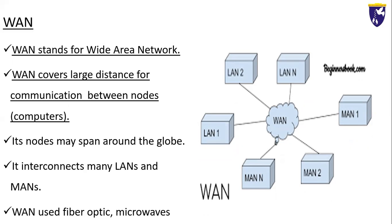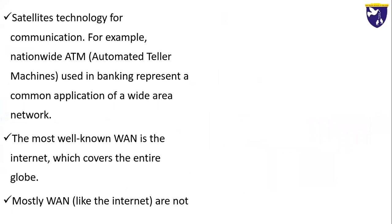Anything connected within the network is called a node — it can be a computer, a smartphone, a camera, or a printer. When nodes cover large area distances, they may span around the globe. We can say that the nodes of a Wide Area Network cover all over the globe. WAN interconnects many LANs and MANs. The big difference of WAN is that it consists of many LANs and many MANs. When we combine more MANs and more LANs together, it becomes a WAN.